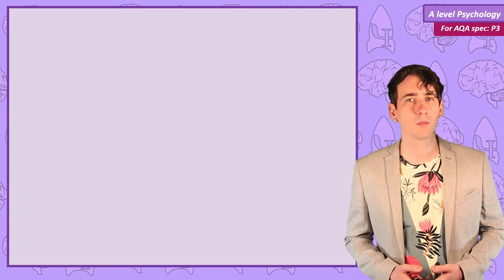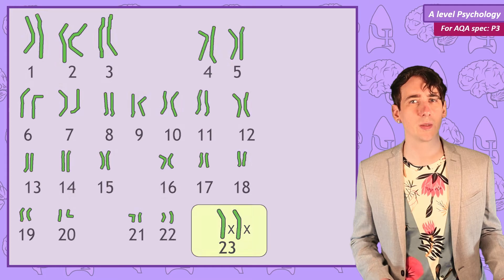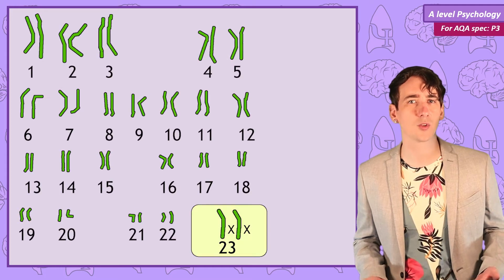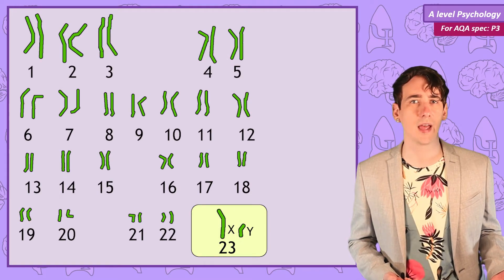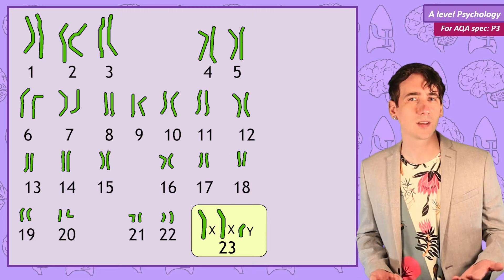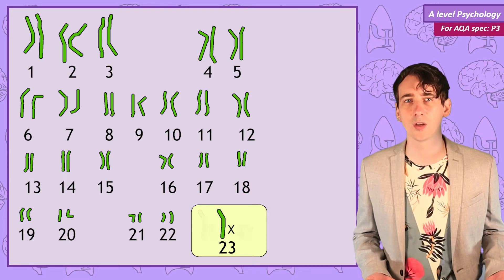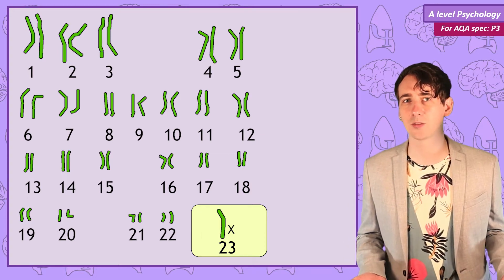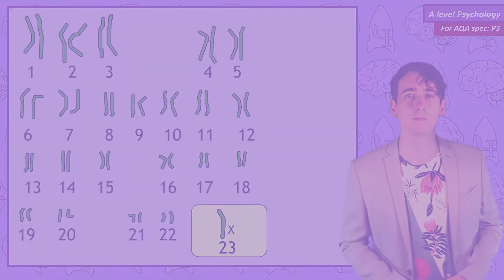And what happens if someone isn't born with the typical XX or XY combinations? Can you have extra chromosomes, so XXY? Or one less, so just X? Well let's take a look.